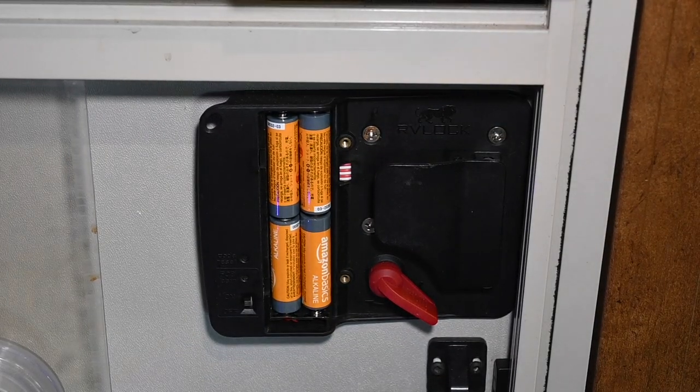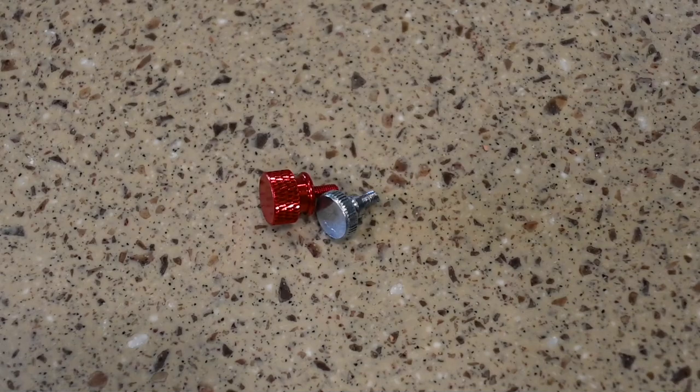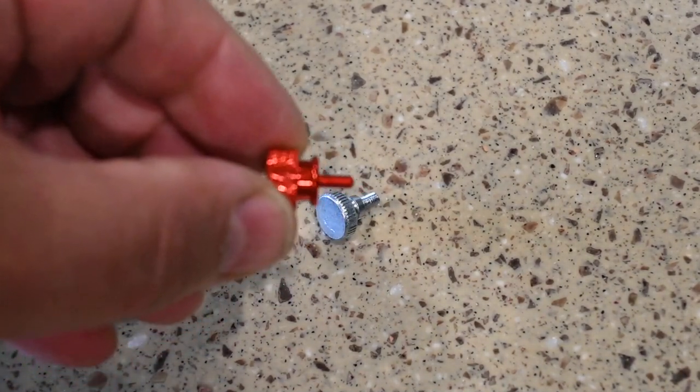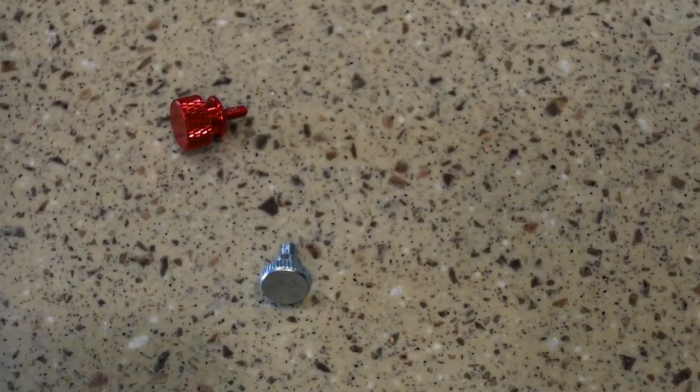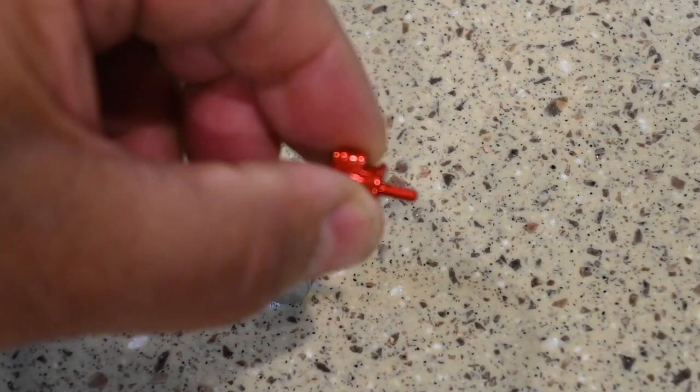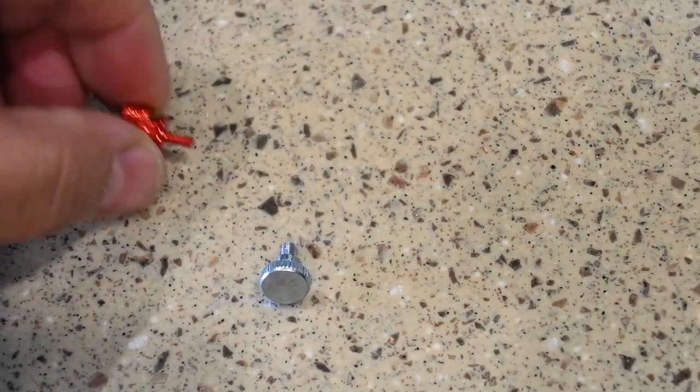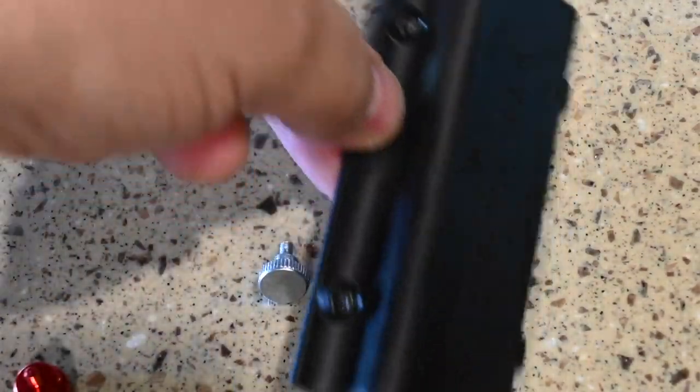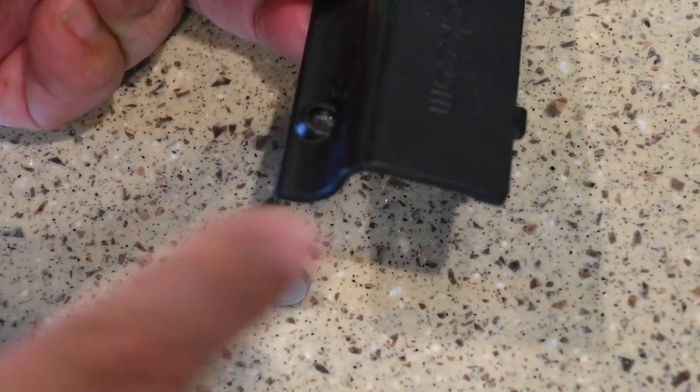I found these two little thumb screws - there's this type and this one - and they're both M3s and about seven or so millimeters in length on the thread side. The problem is the door has this profile here.